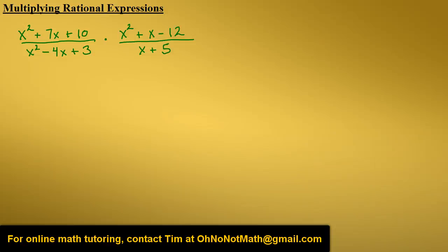Multiply the rational expressions x squared plus 7x plus 10 over x squared minus 4x plus 3 times x squared plus x minus 12 over x plus 5. Let's start with the first fraction and factor the numerator.